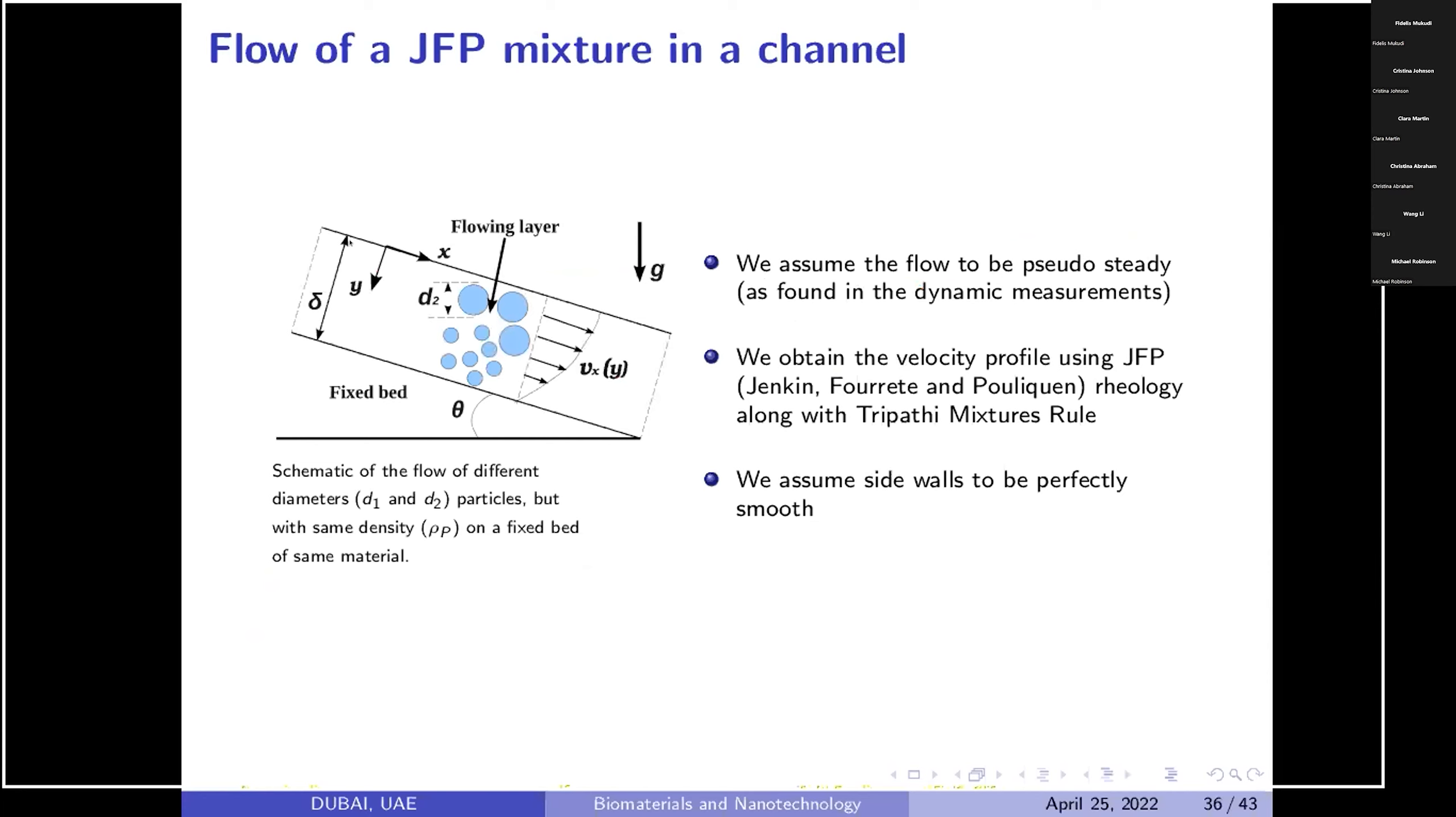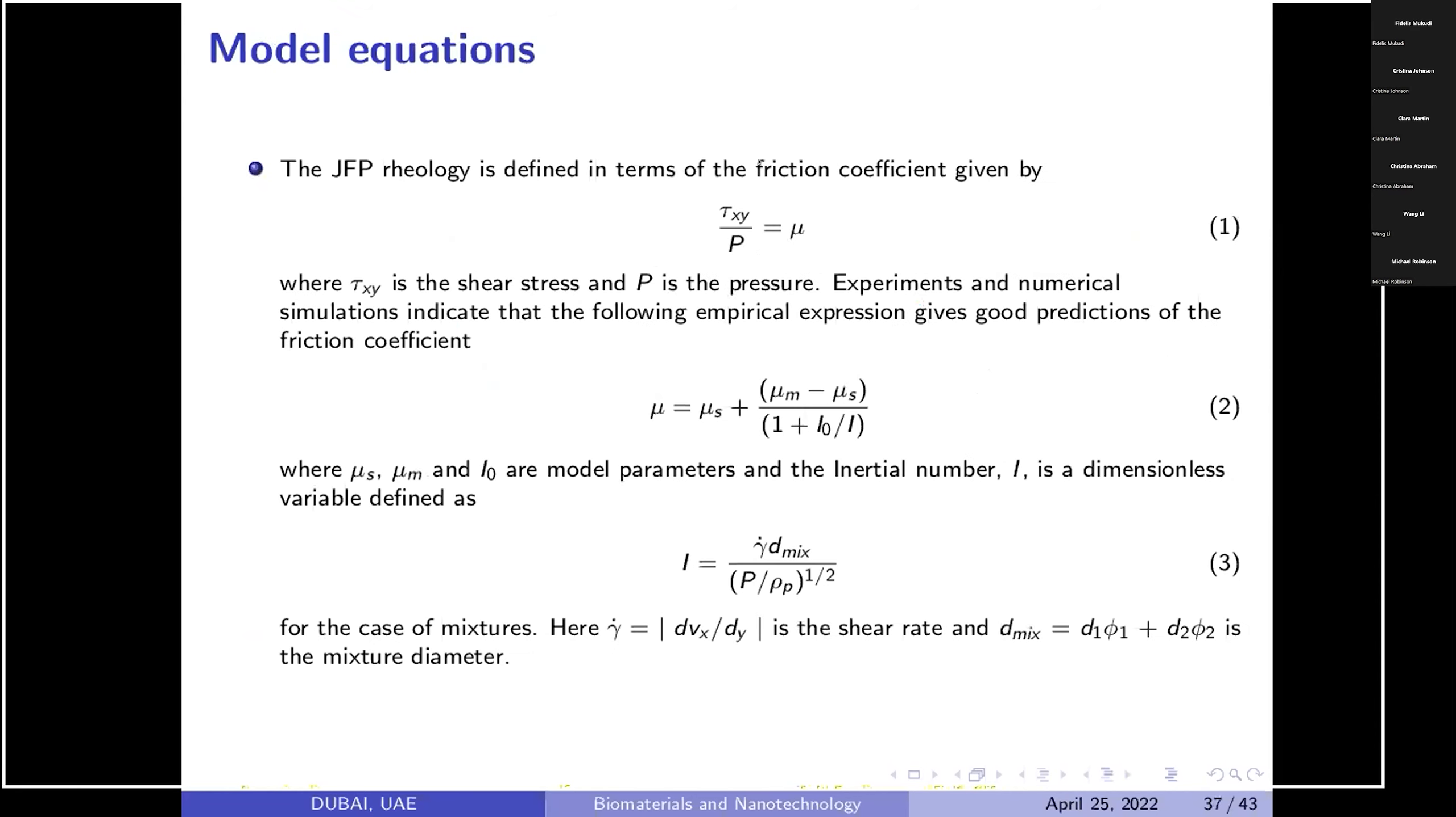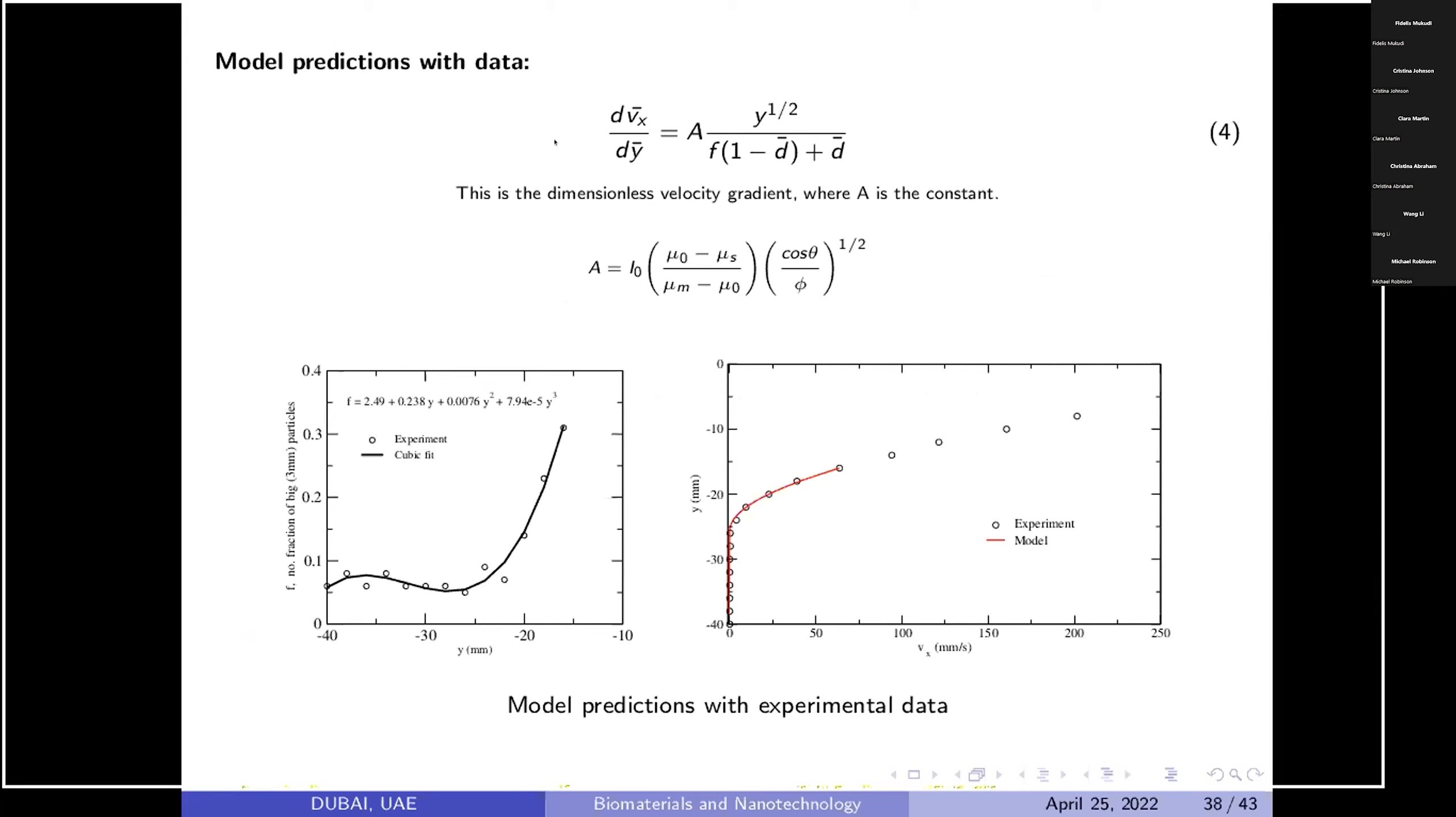This was the last part which we modeled using Jenkins and Savage model, mixture theory and channel flow. What we have observed is the flowing layer and what we try to mimic is small and large particles which were talked about in the flow. We have considered flow of mixture in this channel. As I already mentioned, shear stress and that viscosity relationship with static and dynamic, we try to predict the model and model fits in a polynomial fit, you can say.